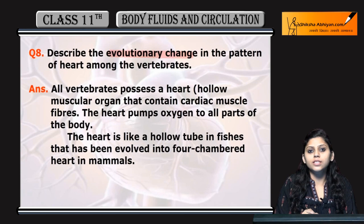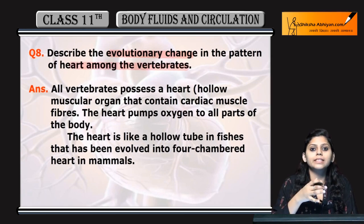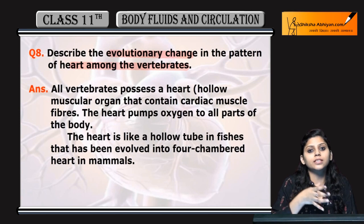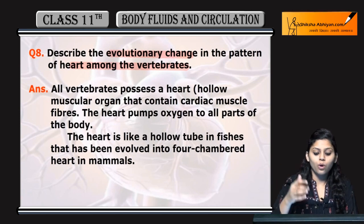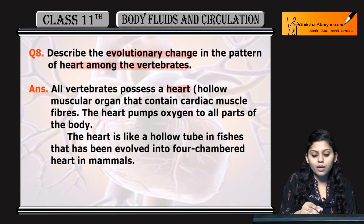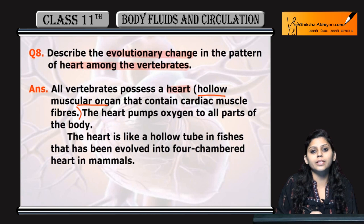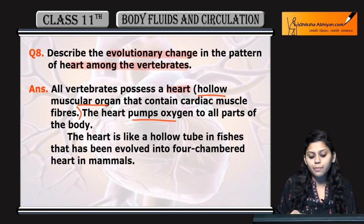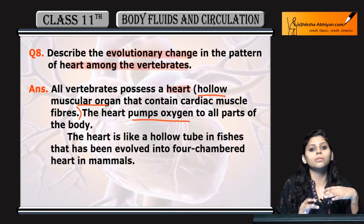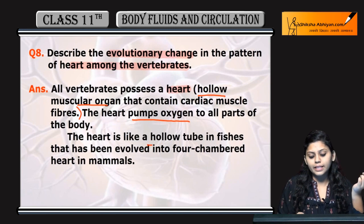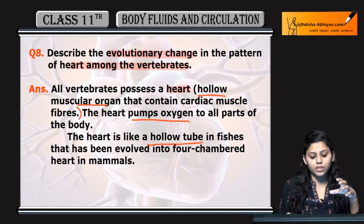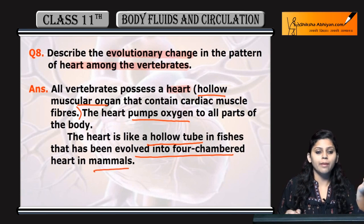Describe the evolutionary changes in the pattern of heart among the vertebrates. We will start from Pisces, from fishes, up to mammals. All the vertebrates possess heart. Heart is a hollow muscular organ that contains cardiac muscle fibers. Heart pumps oxygen to all parts of the body. Heart is a hollow tube in fishes and evolved into a 4-chambered heart in case of mammals.